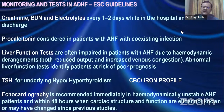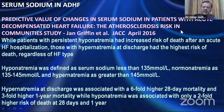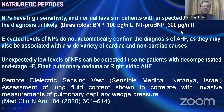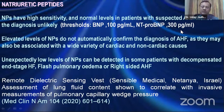Look into the anemia and iron profile specifically, because ferric carboxymaltose (FCM) is of great utility. Hypernatremia is associated with a six-fold higher one-month mortality and a three-fold higher one-year mortality compared to even hyponatremia. Keep sodium in the range of 135 to 145. Natriuretic peptides and ST2 are important biomarkers; BNP threshold is 100. An elevated BNP does not necessarily confirm heart failure, as there are multiple non-cardiac causes.